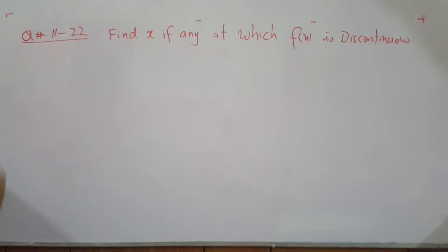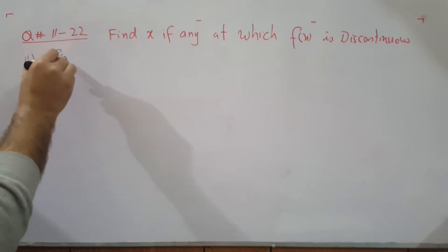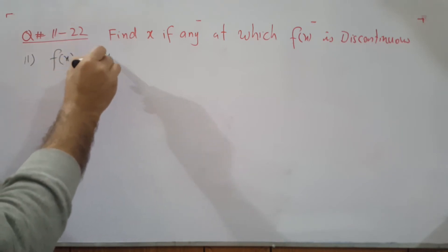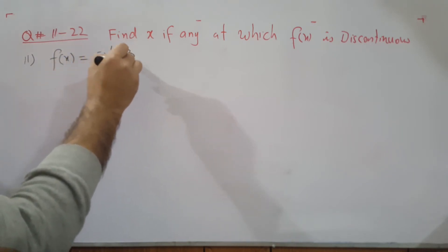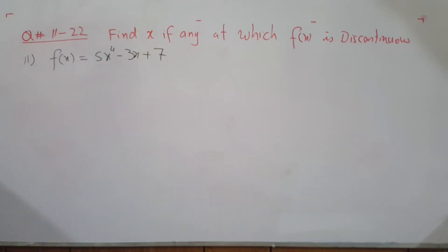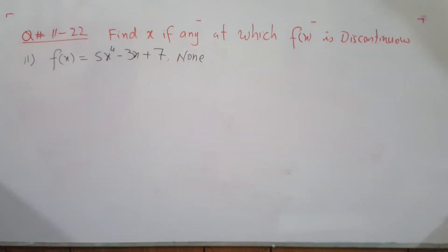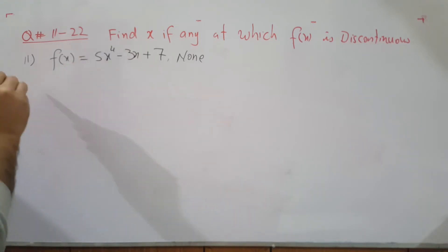From questions 11 to 22, we need to find any x values at which the function is discontinuous. Question 11: f of x equals 5x⁴ minus 3x plus 7. You can see this is a polynomial, and all polynomials are continuous, so there is no x at which the function is discontinuous — it is continuous on all real numbers.